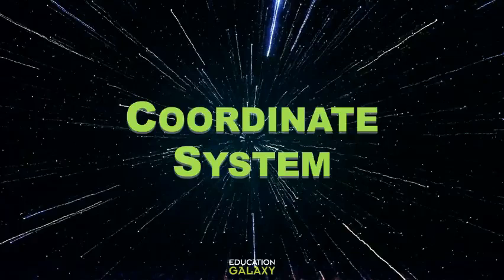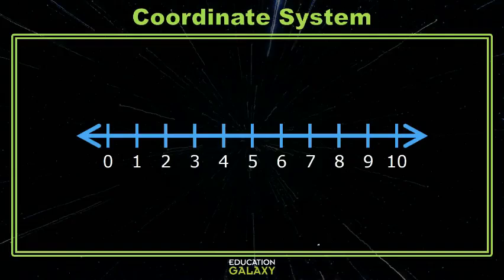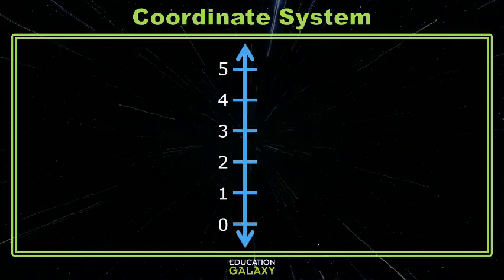Today we're talking about the coordinate system. What's the coordinate system? Well, you know what this thing is. It's a number line. More specifically, it's a horizontal number line. And sometimes you see your number lines this direction, up and down, and that's called a vertical number line.